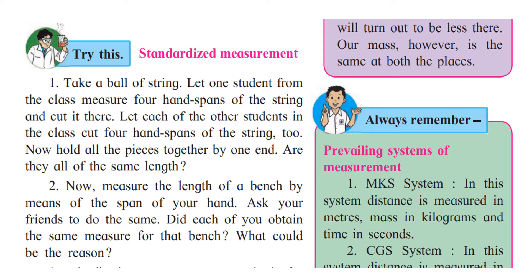Let one student from the class measure four hand spans of the string. Now what is a hand span? A hand span is from the tip of your little finger to the tip of your thumb, outstretched. If you outstretch your hand, from the tip of your little finger to the tip of your thumb — that is called the hand span.